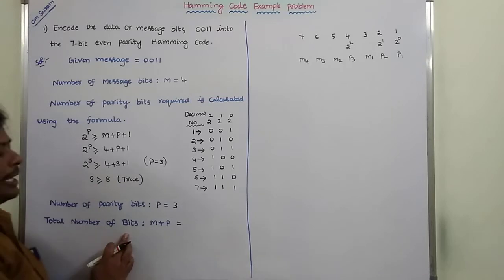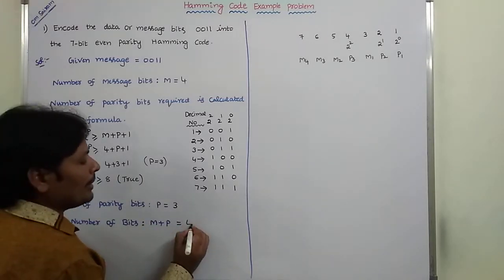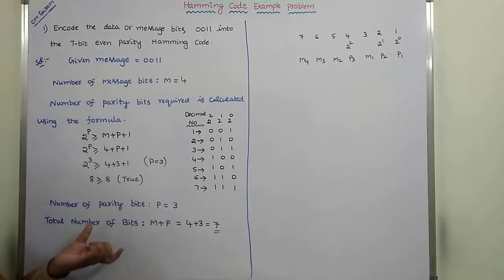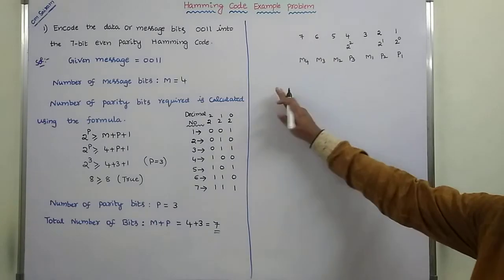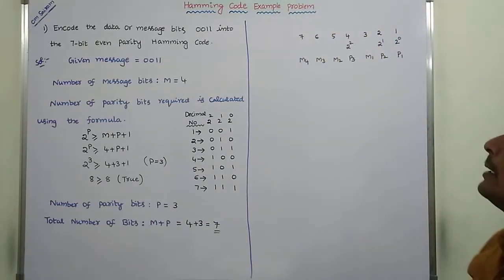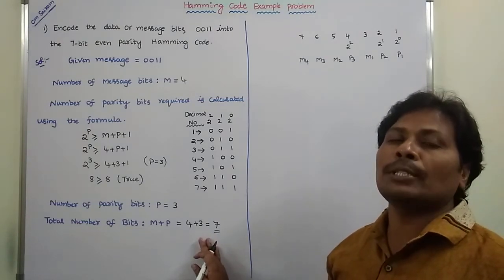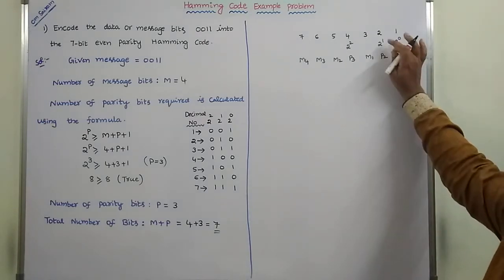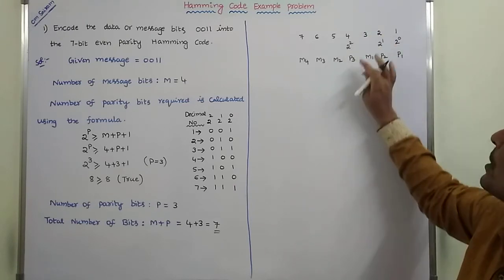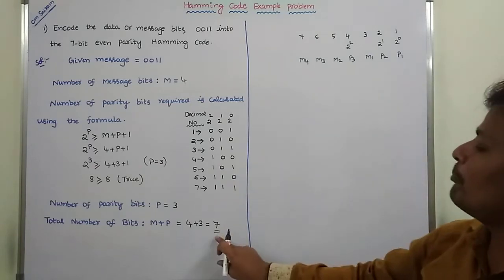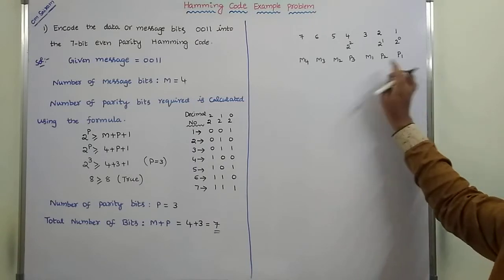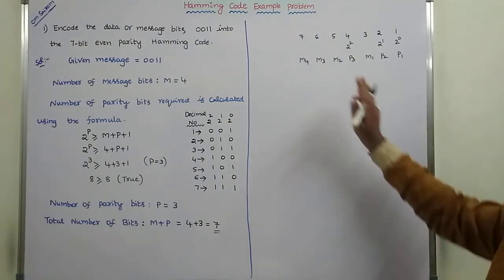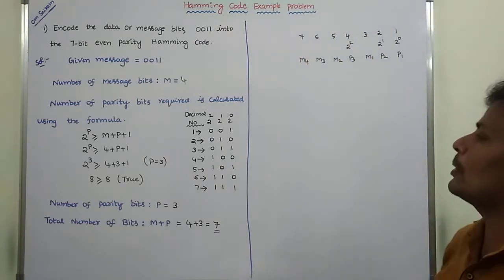Total number of bits is equal to number of message bits plus number of parity bits, that is 4 plus 3 equals 7. These 7 bits can be represented where this is LSB and this is MSB. Parity bits are located at bit positions that are powers of 2: at 2 power 0 position parity bit 1 is there, at 2 power 1 position parity bit 2 is there, and at 2 power 2 position parity bit 3 is there. Among the 7 bits, 3 bits are parity bits and the remaining 4 are message bits.